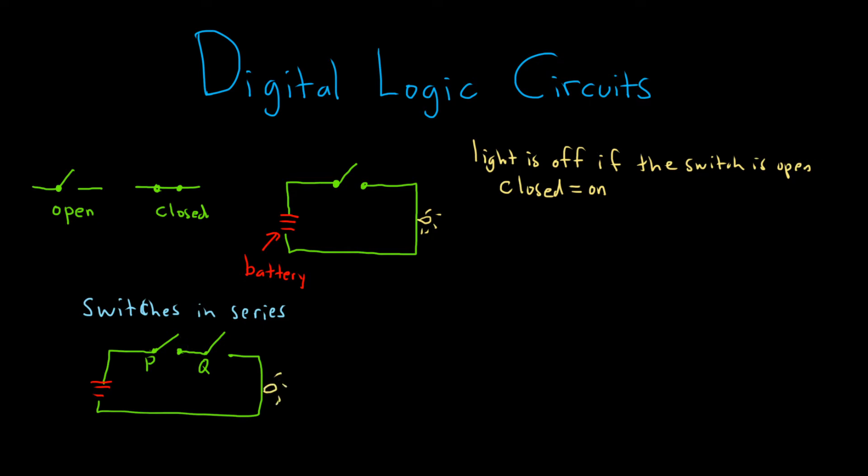So in this case, when the switches are in series, the only way that current is going to flow to turn this light bulb on is if both switches are closed. So in other words, if both P and Q are closed. So the light bulb is on if P, Q are both closed. So you can see how this already can relate to mathematical logic. Remember, P and Q will be true only if P and Q are both true. Likewise, this light bulb will turn on only if P and Q are both closed. The light will turn on only when P and Q are true.